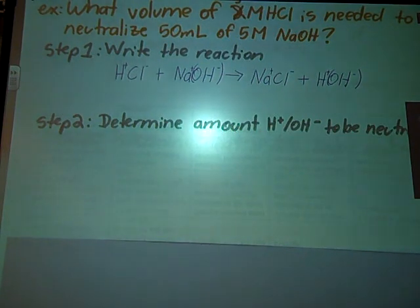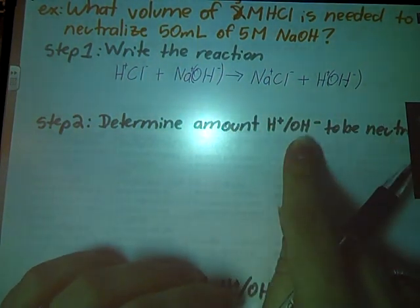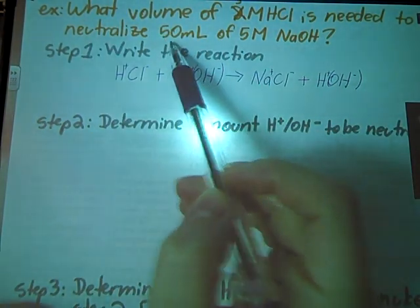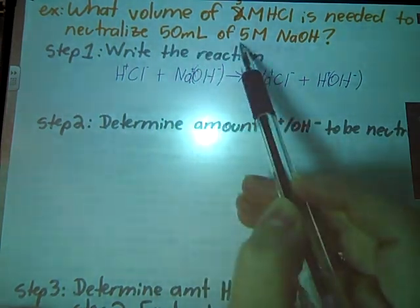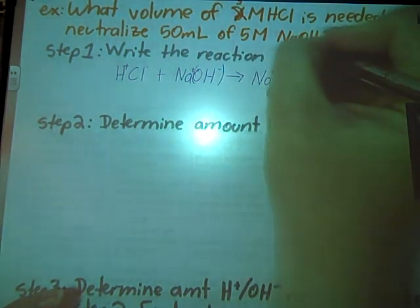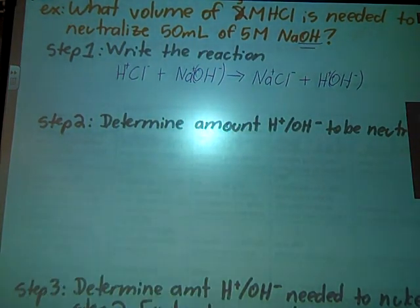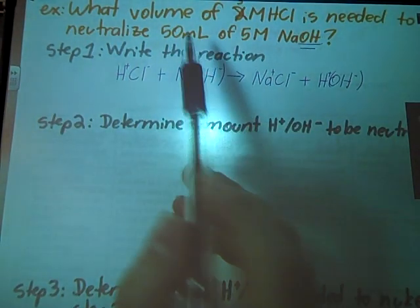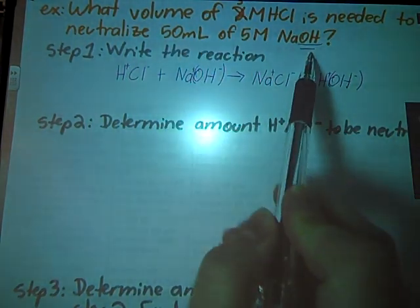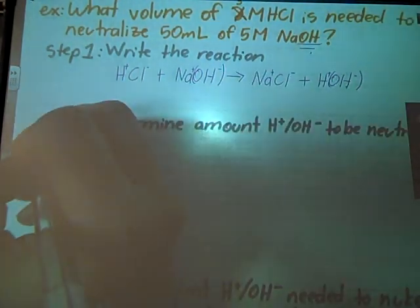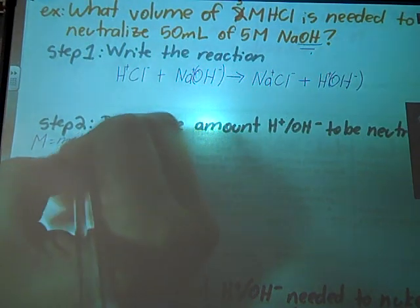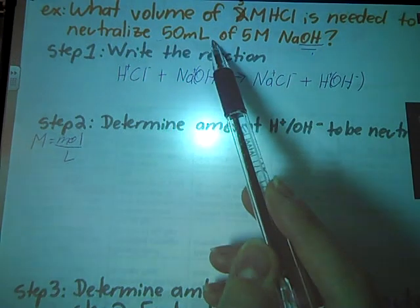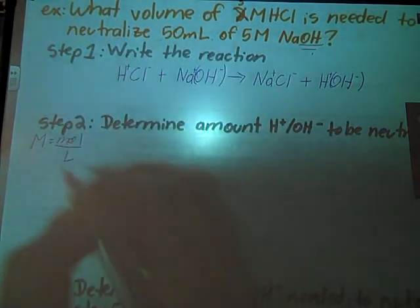Step two is to determine the amount of H plus or OH minus that needs to be neutralized. I'm neutralizing 50 mils of a 5 molar sodium hydroxide solution. I need to know how much OH is there in that 50 mils of 5 molar solution. If you remember from our solutions chapter, molarity is moles over liter. So if I do molarity times volume, I end up with moles.